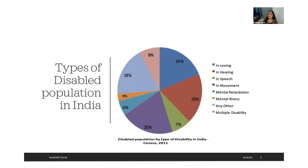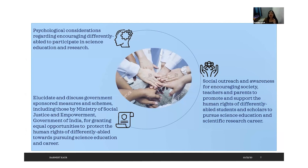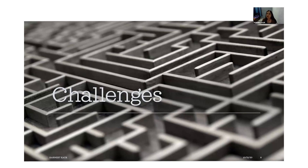Looking at the pie chart of disability types: 19% vision impairment, similar percentage for hearing impairment, and 20% with physical disability. The objectives I'm addressing today are: psychological considerations, social outreach and awareness — including teachers' and parents' awareness — and a glimpse of government policies. I will cover the challenges these people face and then how to address them, though addressing the challenges is something we need to think about together.